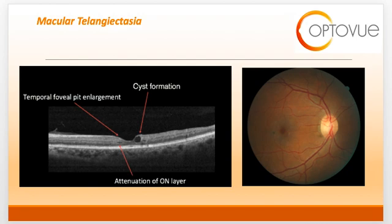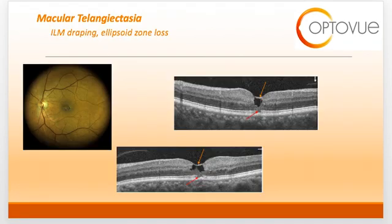On the left-hand side, you can see the early OCT signs of mactel. These include temporal foveal pit enlargement, secondary to loss of the outer nuclear layer and ellipsoid zone, that eventually can progress into cavitations or cysts on the superficial part of the OCT scan. You can see on this scan that I have delineated the cyst formation, the temporal foveal pit enlargement, and the attenuation of the outer nuclear layer. Often, only the internal limiting membrane is left in place over these areas, lending to the term ILM drape.